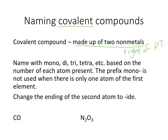We're going to name covalent compounds with the prefixes: mono for one, di for two, tri for three, tetra for four, pent for five, hex for six, hept for seven, oct for eight, non for nine, and dec for ten.